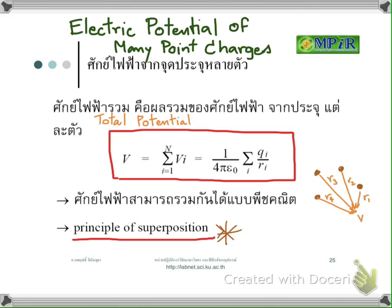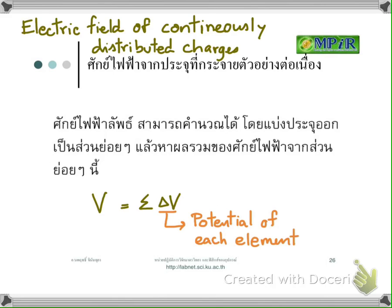So if you have a system of point charges, you can use this expression. But if the charge is distributed continuously, we have to do something similar to when we calculate the electric field. If you have a distribution of charge here and you want to calculate the electric potential at this point, so far we only have the expression for discrete charges — so what can we do in this situation?